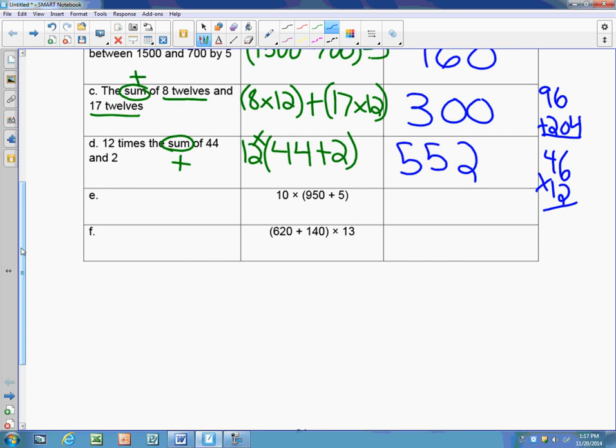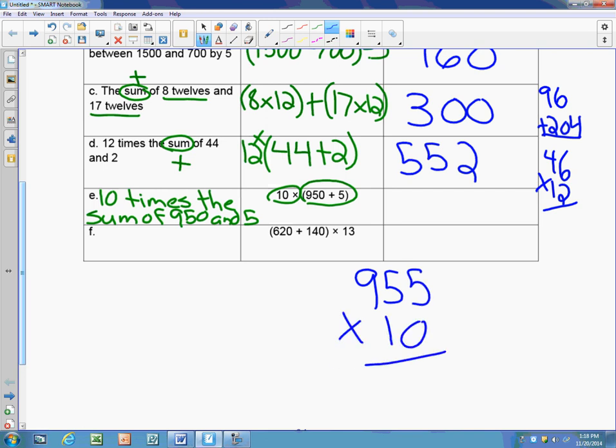Next one, they gave me the numbers this time and they want me to write the expression in words. Here I know that I'm doing 10 times something. So I'm going to start by writing 10 times. What's going on in here is addition. So I'm finding 10 times the sum because it's addition of 950 and 5. Now in order to solve it, first thing I need to do is what's in parentheses: 950 plus 5 is 955. When I multiply that by 10, I can use the zero rule nice and easy and I get 9,550.